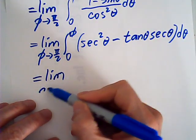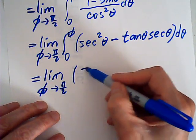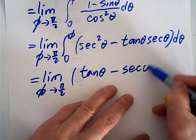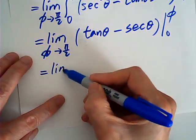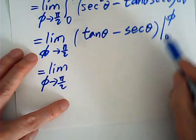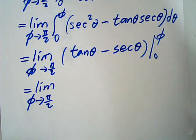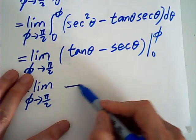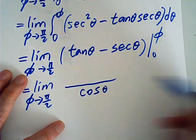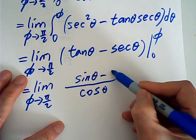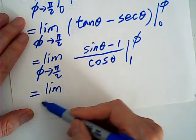The integral now becomes much easier. There is a limit as φ → π/2, and this gives tanθ and secθ evaluated from 0 to φ. Taking the limit, tanφ causes a problem, so I'll combine these two together. sinθ/cosθ minus 1/cosθ gives a common denominator, and the numerator is sinθ − 1.